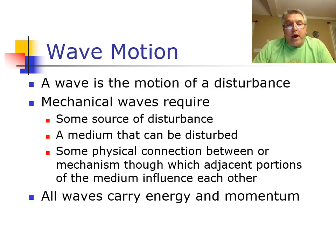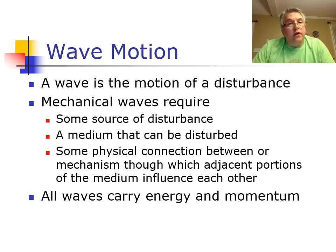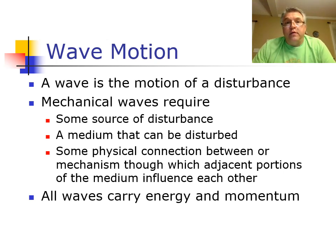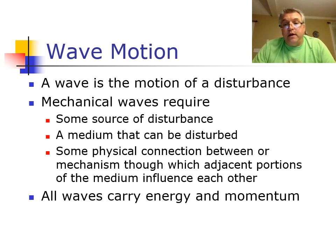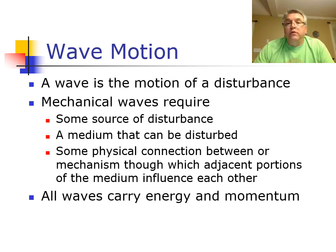Now let's talk about waves. A wave is a disturbance in some type of medium that moves and actually travels. There are lots of different types — waves in the ocean, sound waves traveling through air, seismic waves traveling through solid rock. Right now we're looking at mechanical waves. Mechanical waves require a source of disturbance to cause the wave to travel, and they require some type of medium to travel through — water, air, or solid materials.